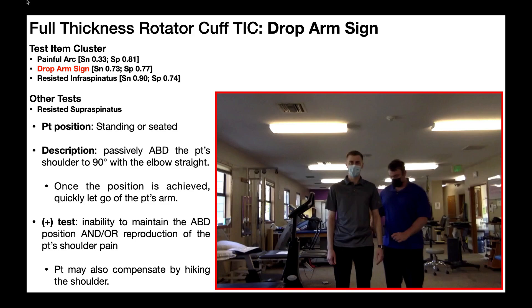You can begin with the patient in seated or standing. I'm going to passively abduct the patient's shoulder to 90 degrees while keeping the elbow straight. Once I get to that position, I'm going to quickly let go of the arm, and the patient's job is to keep the arm elevated in that same position. Assuming a healthy rotator cuff, the patient should be able to hold that position no problem. But if somebody has a rotator cuff tear, they're either not going to be able to maintain that position, or they're going to have pain once I let go and they have to activate those muscles.